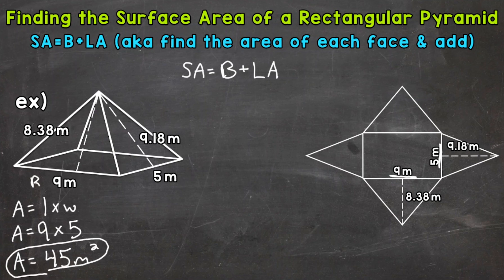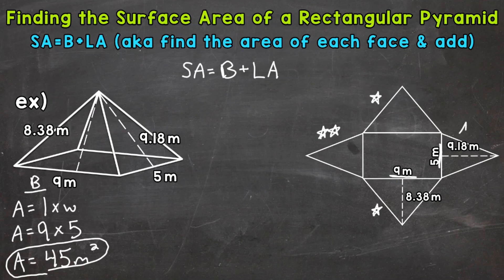So the area of our rectangular base is 45 square meters. I'll put a capital B above that so we know that is the area of the base. Now that we have the area of the base, we can move to the lateral faces. Since we do not have a regular base — regular means all of the sides are the same — we will have two different slant heights, and therefore two different areas for our lateral faces. The top and bottom of the net have the same area, with a base of 9 meters and a height of 8.38 meters. The left and right have a base of 5 meters and a height of 9.18 meters.